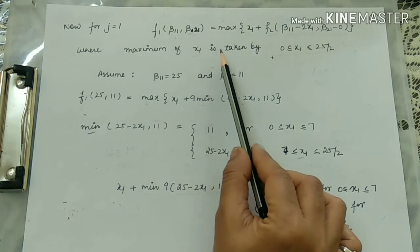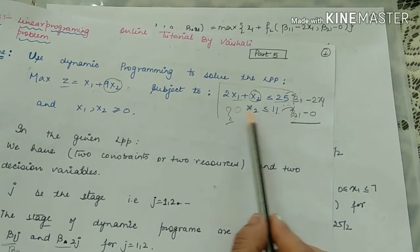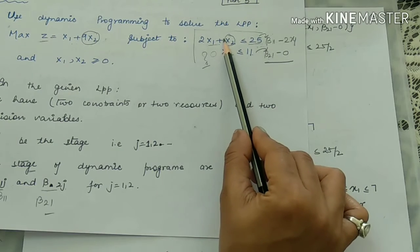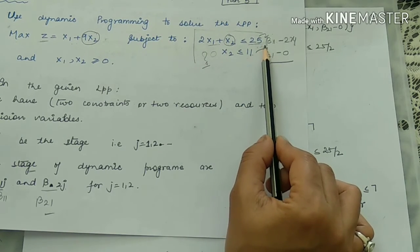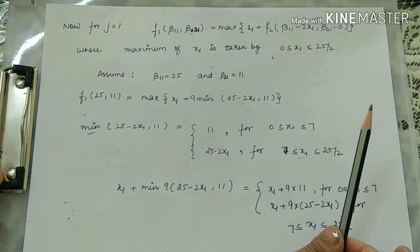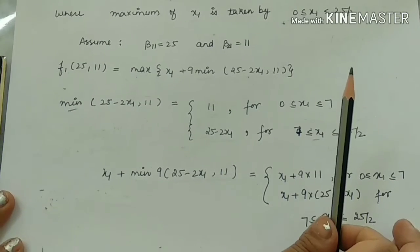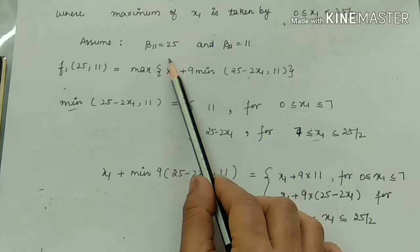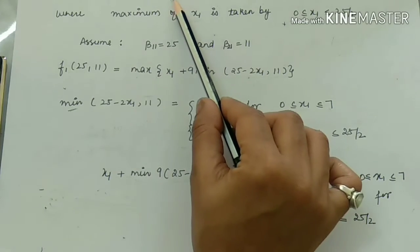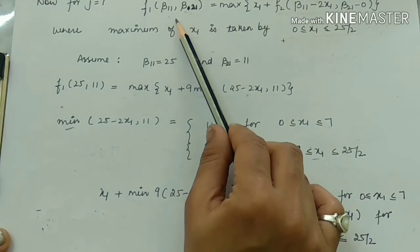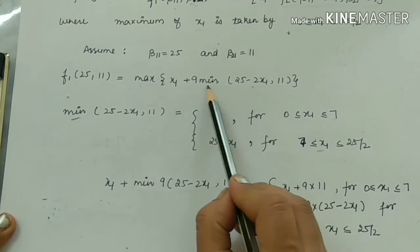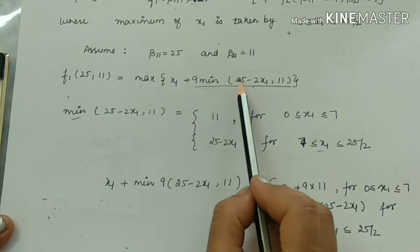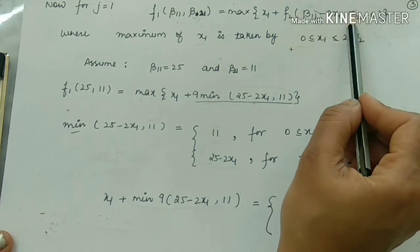The maximum value of x1 is found by putting x2 = 0 in the first constraint, giving x1 = 25/2. So x1 varies between 0 and 25/2. The second constraint does not contain x1, so we only use the first. With β11 = 25 and β21 = 11 substituted into F1(25, 11), we get: max of x1 + 9 × min(25 − 2x1, 11). We now have a new functional equation to solve.